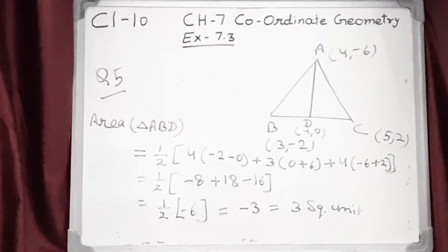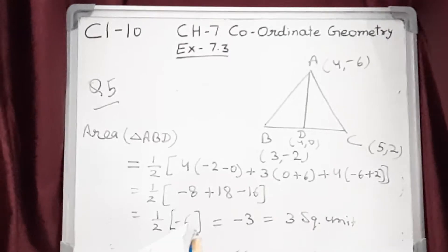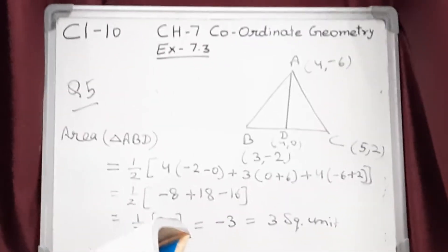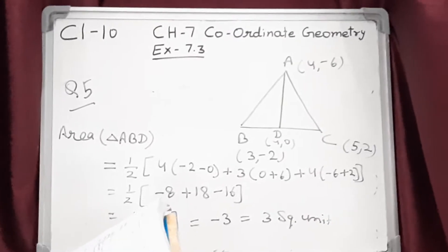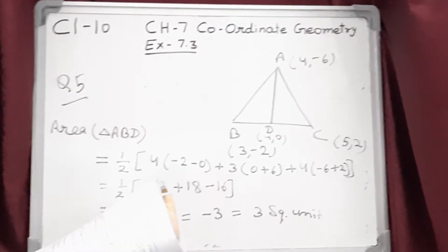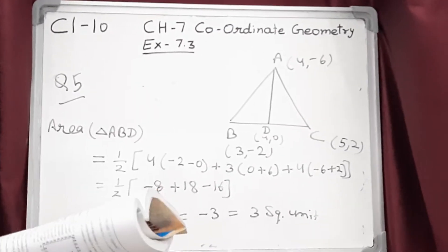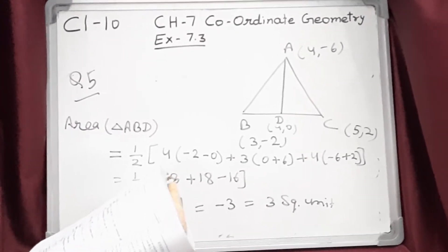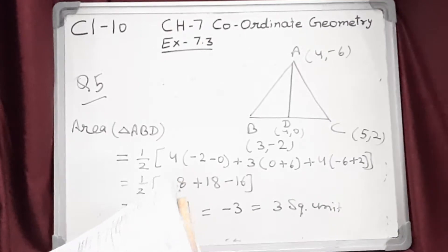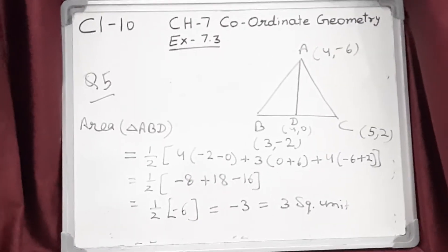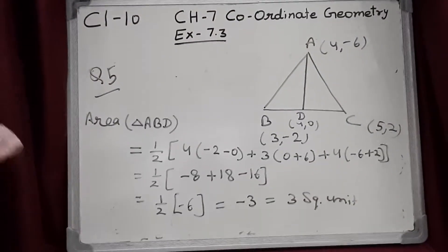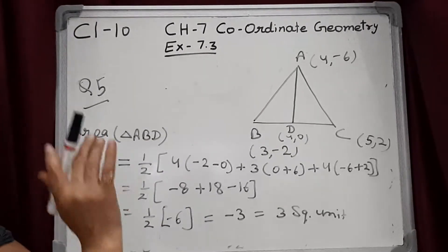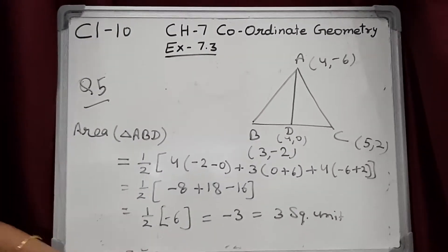Now question number 5. You have studied in class 9, chapter 9, example 3, that a median of a triangle divides it into two triangles of equal area. Verify this result for triangle ABC whose vertices are A(4, −6), B(3, −2) and C(5, 2). In class 9, we studied that the median of a triangle divides it into two equal areas — this is the theorem.